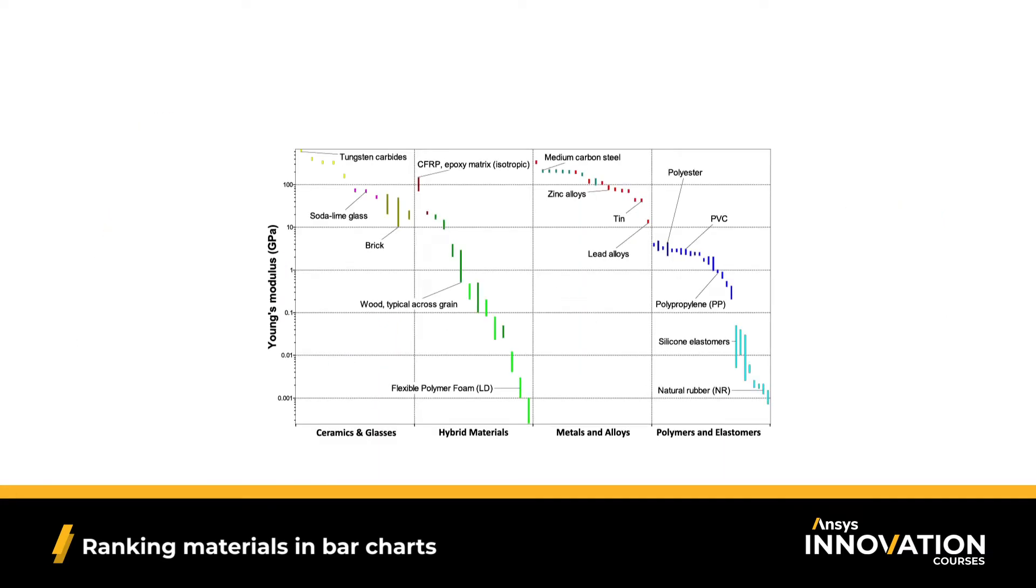So when looking at a chart of Young's modulus, perhaps we're interested in a very stiff material for an application like a dinner plate. I know I don't want a floppy dinner plate. Therefore, we want a material with a high Young's modulus, or to maximize Young's modulus. So we focus on the upper portion of our chart.